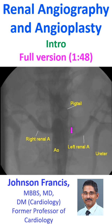Selective renal angiograms can be obtained by introducing either a Jutkin's right coronary catheter or a Cobra catheter into the renal artery ostium and gently injecting contrast to fill the renal arteries. The imaging is continued until the nephrogram phase is obtained.